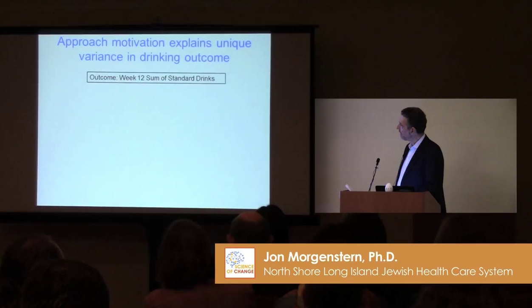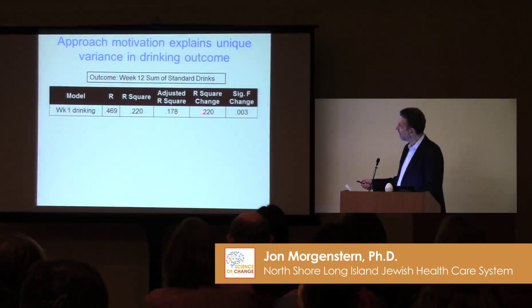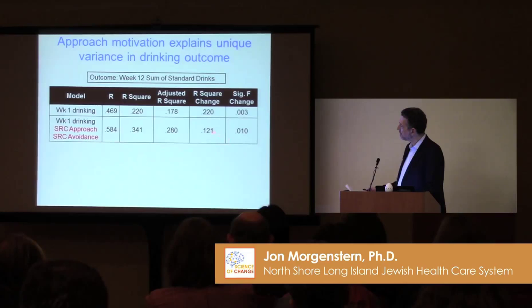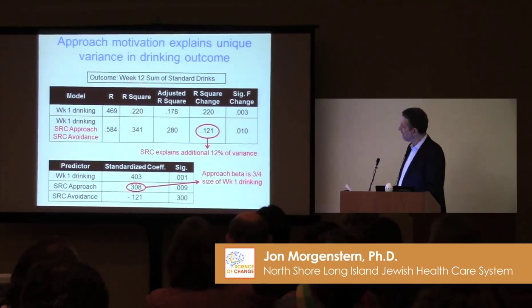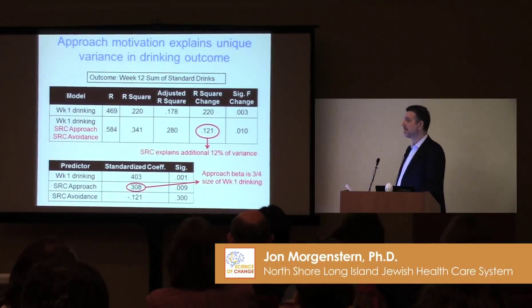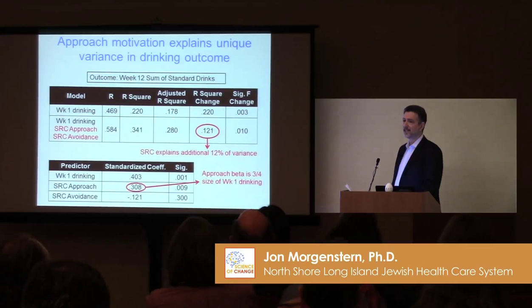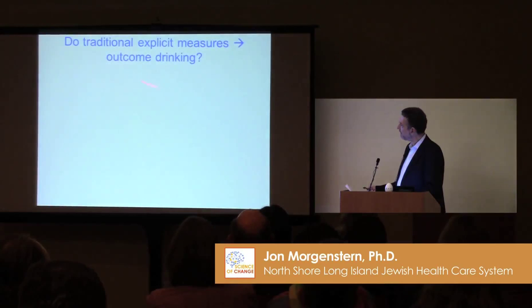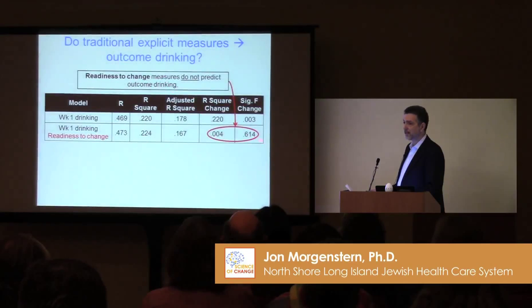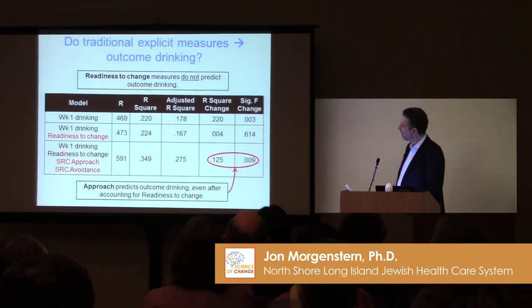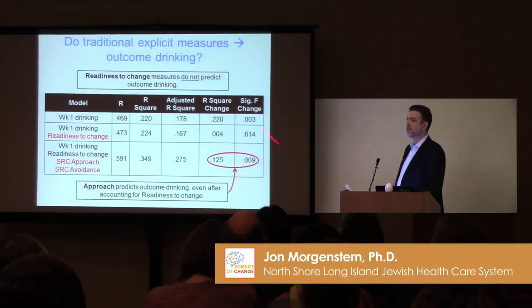Does approach-avoidance explain unique variance in drinking outcomes? Here's month-after-treatment drinking, with baseline drinking predicting a significant amount of the variance. The approach-avoidance score predicts an additional 12% of the variance, accounted for uniquely by approach. The alpha for approach is about three-quarters of the size of baseline drinking — pretty good as a predictor given you're doing a 10-minute task at the beginning of treatment. We then asked: does that do better than a traditional measure? Readiness to change was not a significant predictor, and even when you enter readiness to change first and then enter approach-avoidance, you get the same prediction — demonstrating this measure does better than a standard measure.